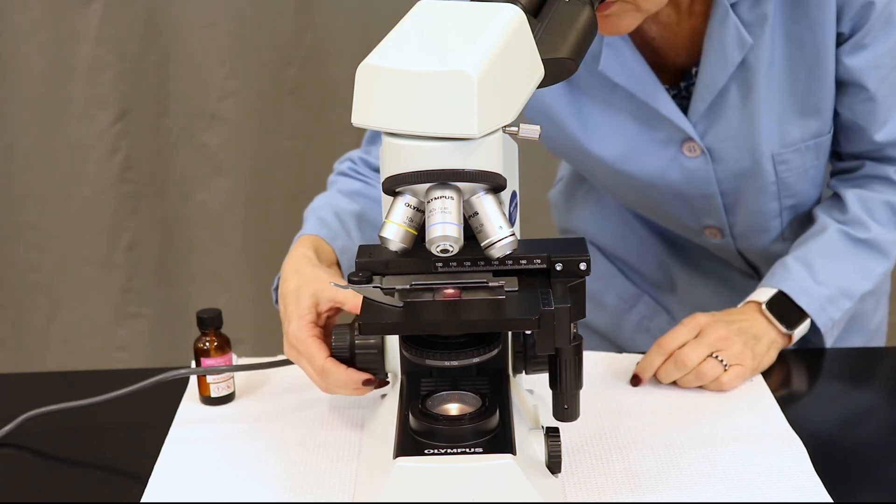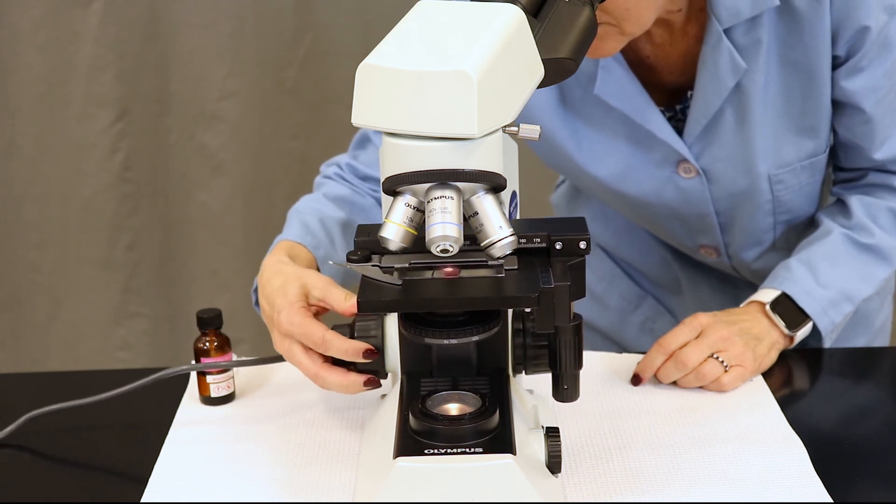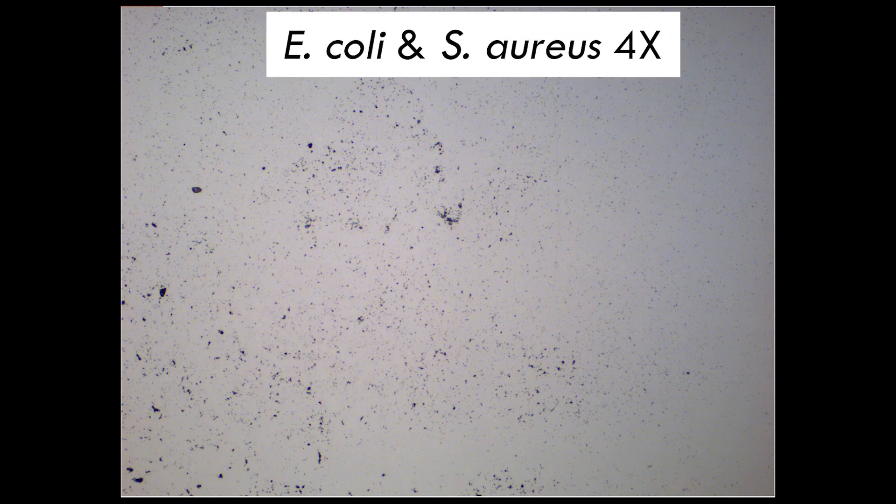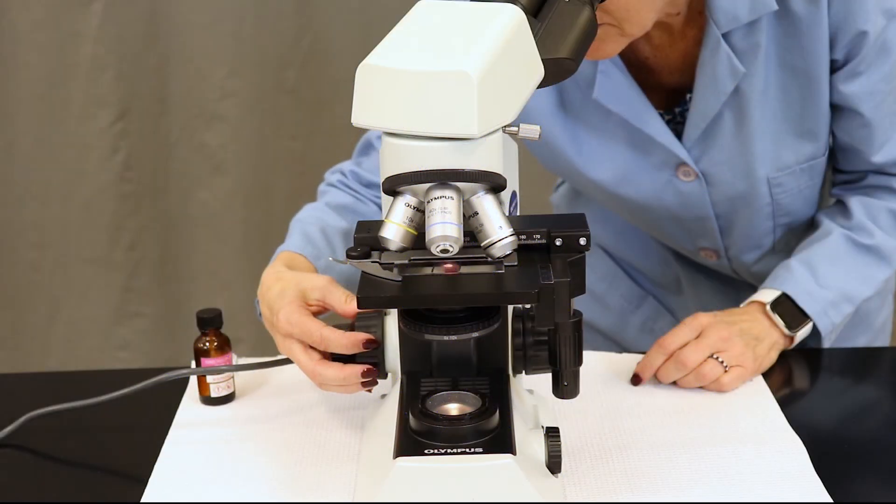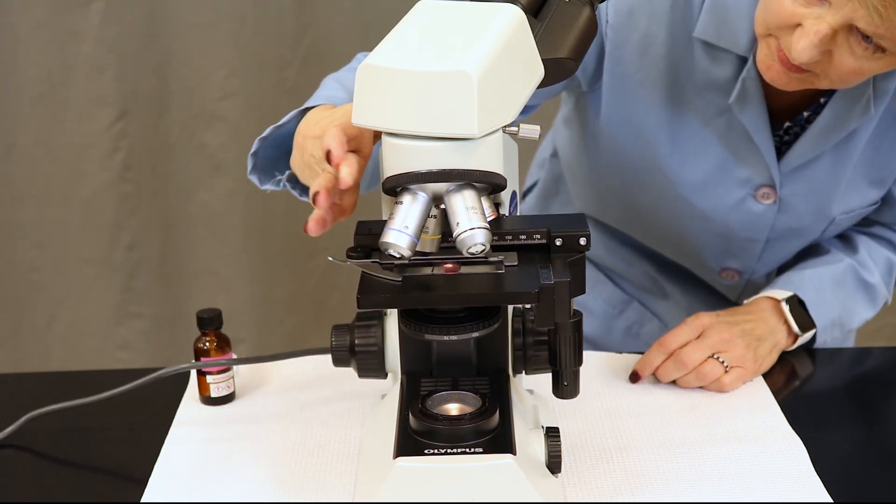Use the coarse adjustment knob or the large knob on the side of the scope to raise the stage. Once you begin to see color, usually either pink or purple in our class, you're ready to move up to the next objective.